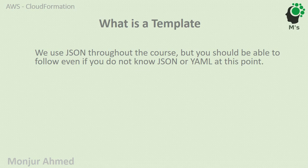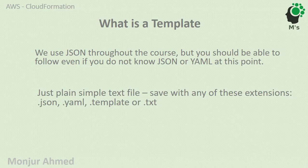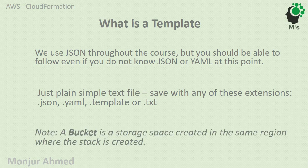In this course, wherever we have any example of templates we will use JSON syntax. At this point, even if you don't know JSON or YAML, it should not be a problem to follow along. A template is saved as a simple text file and normally has one of these four extensions: .json, .yaml, .template, or .txt.